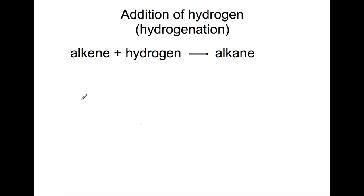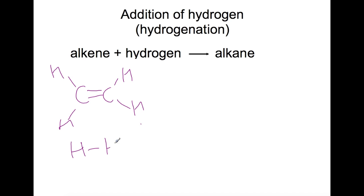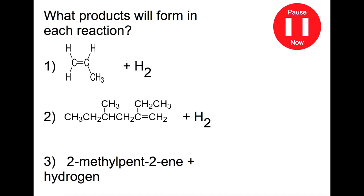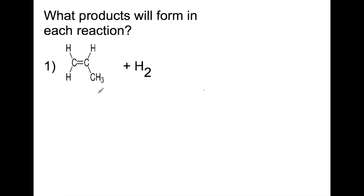The first one we're looking at is the addition of hydrogen, or hydrogenation. When you take an alkene and you add hydrogen across the double bond you get the corresponding alkane. For example, if we take ethene and we add hydrogen, which is a diatomic molecule, we get ethane. We simply add hydrogen to each of these carbons. Pause the video now and try these examples, and ensure that all carbons have four bonds.